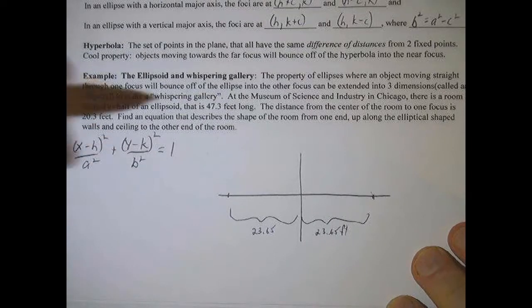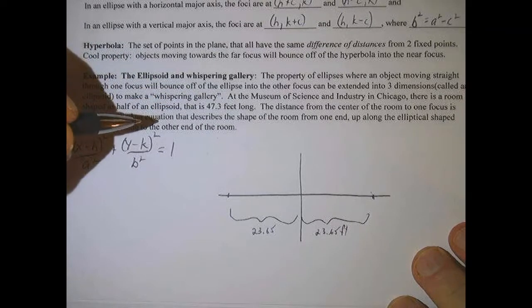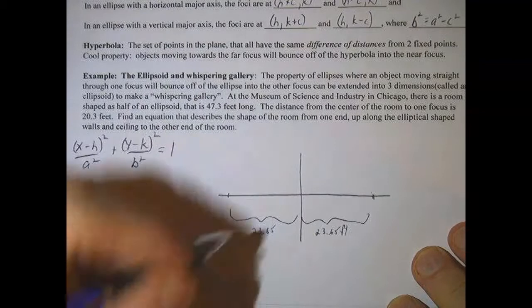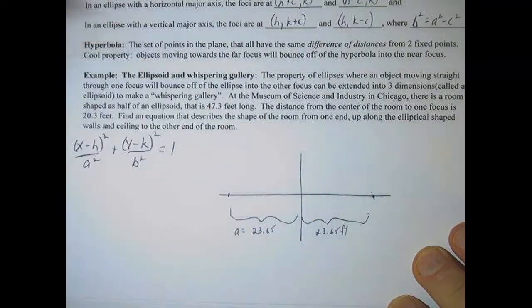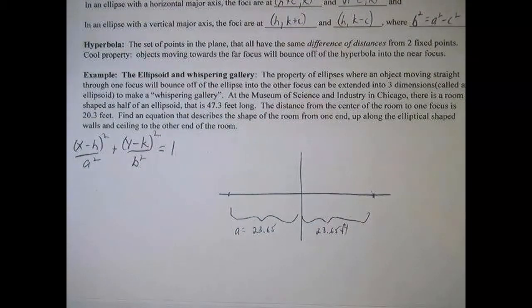So this distance right here would be 23.65 feet on both sides. And so we are given basically the length of our major axis. And you may remember that the major axis is, if it's horizontal, it's going to be 2a. So the number that we were given, the 47.3 is 2a, and this is actually a. This distance is a. So we know a.